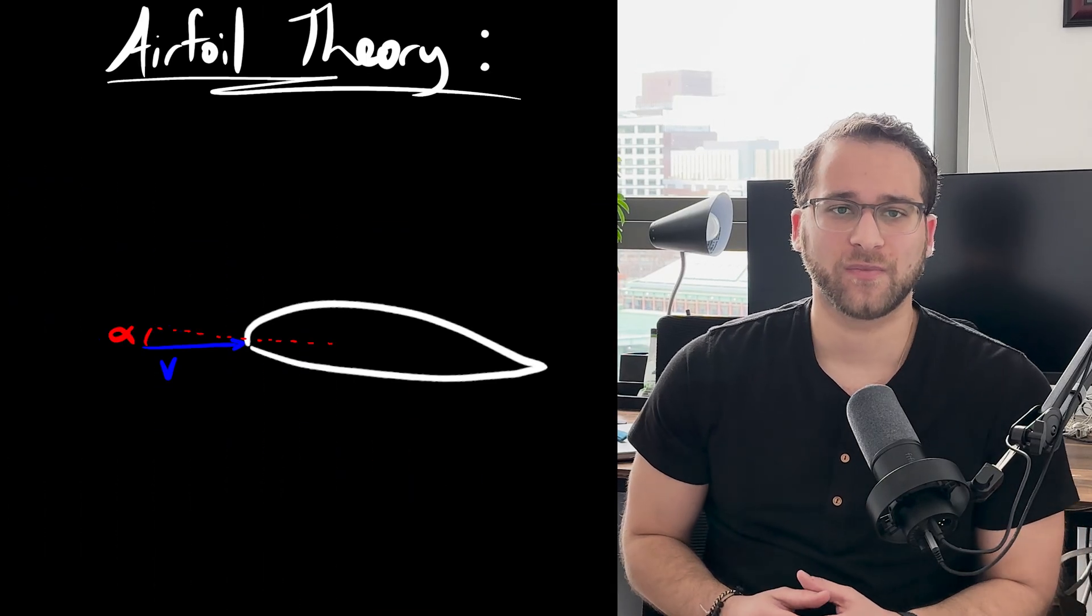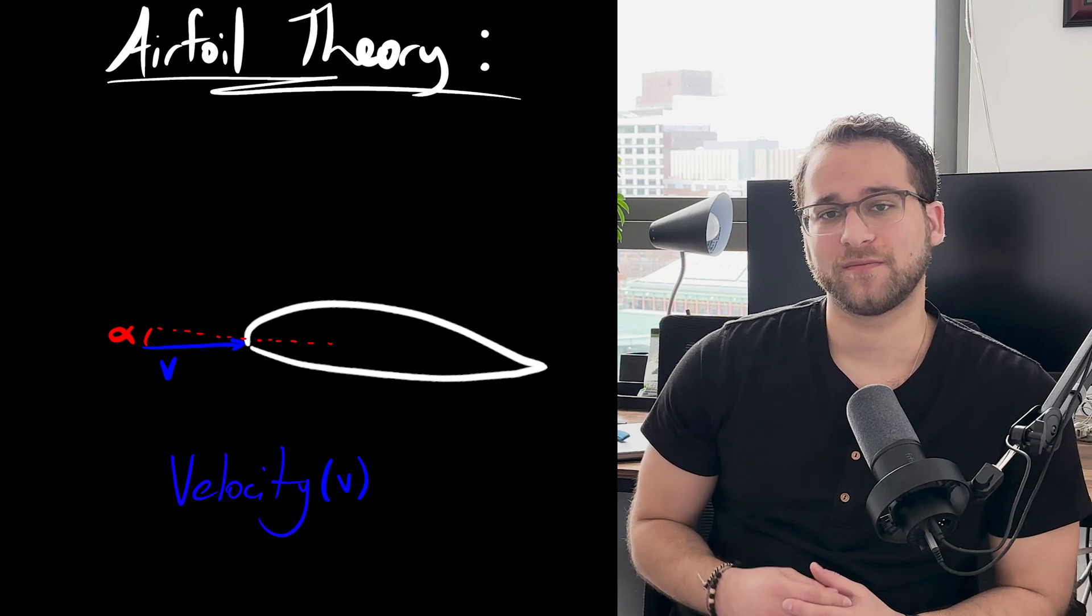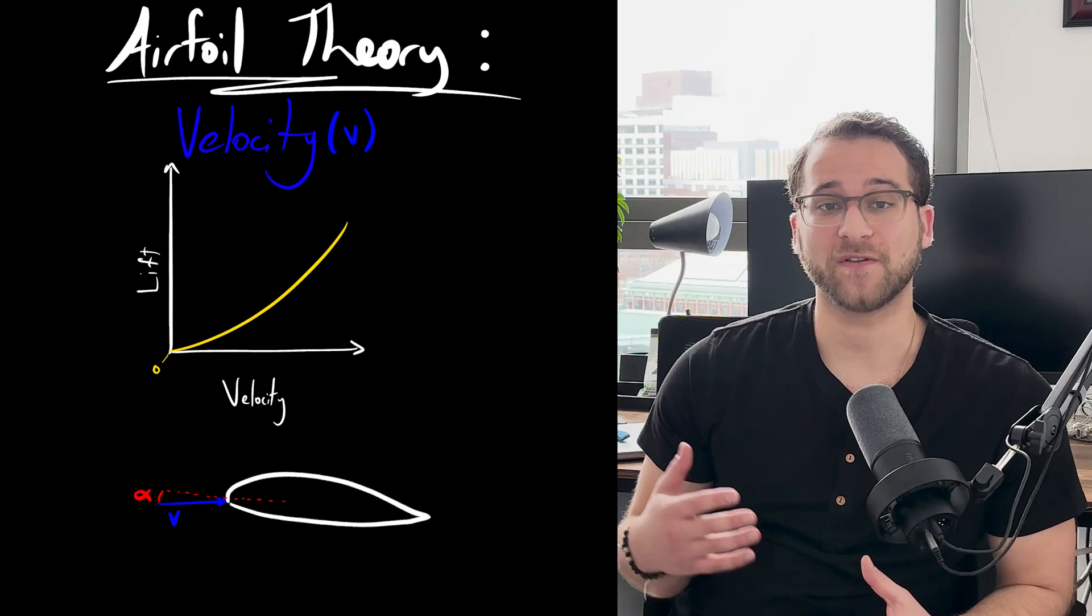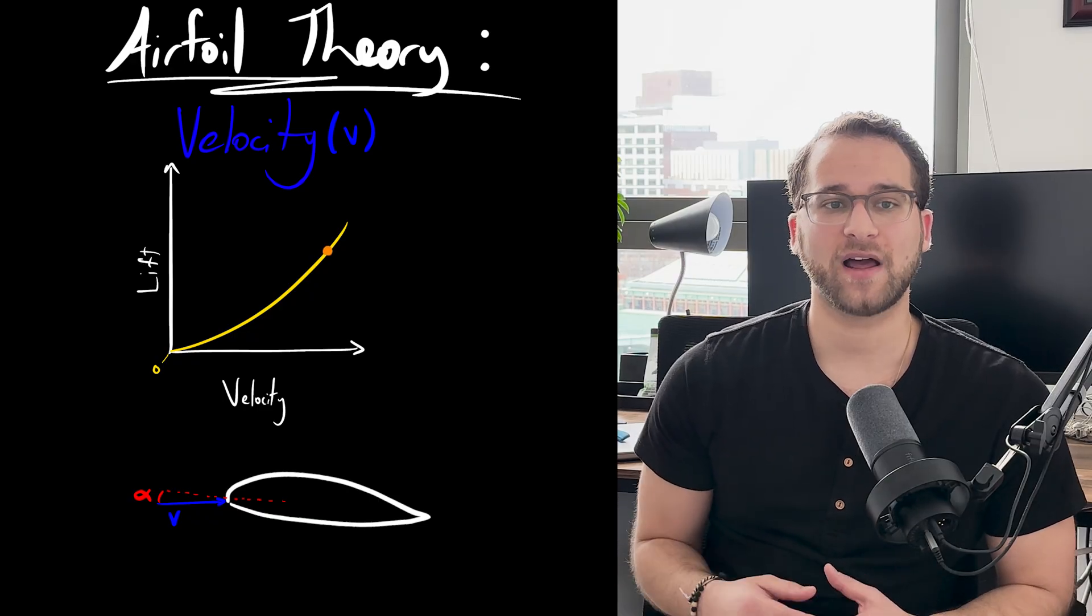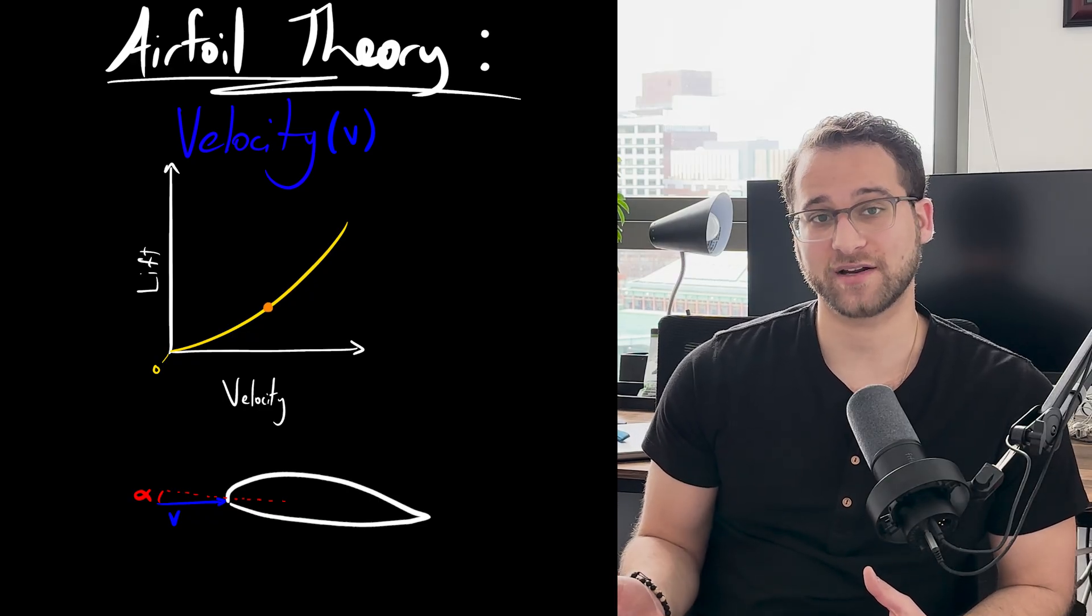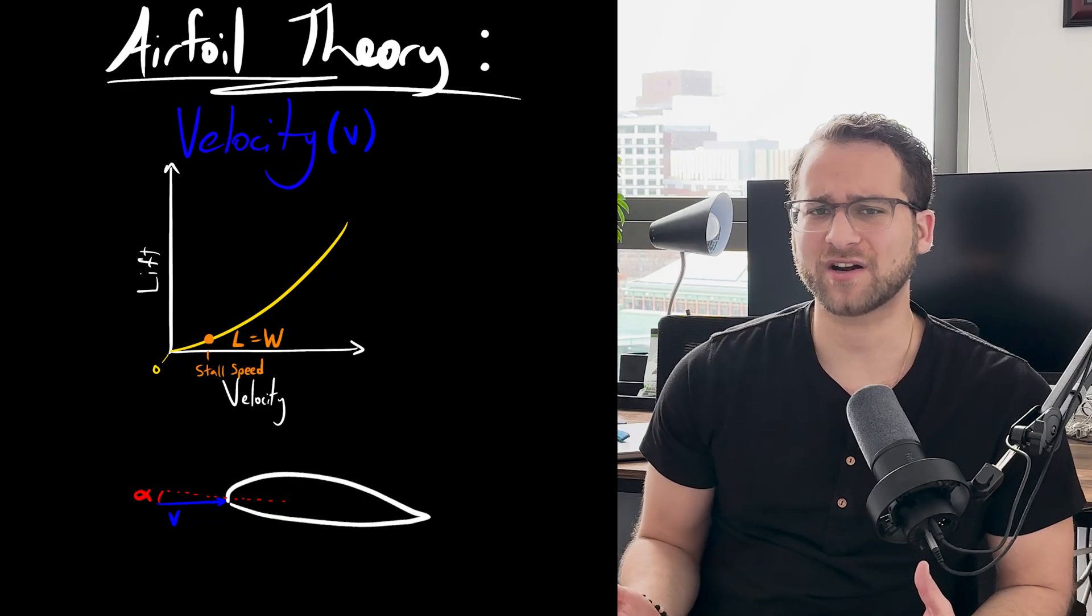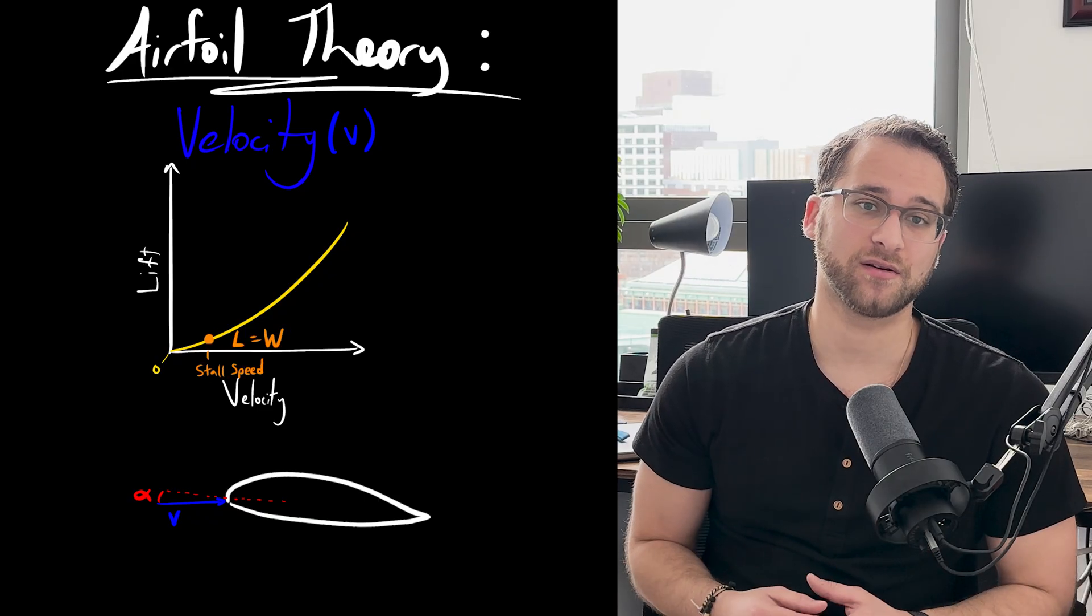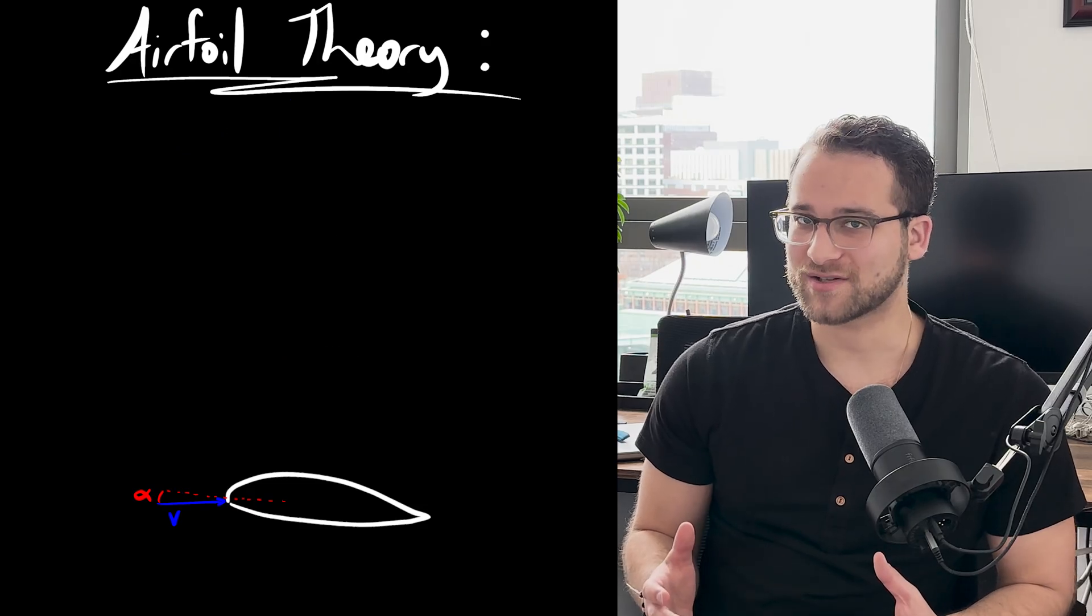But how do we calculate the lift on the airfoil? There are two main variables, velocity and angle of attack. The faster the airflow is relative to the foil, the greater the lift. As the velocity decreases, at a certain speed, the airfoil doesn't generate enough lift to balance out the weight. This can be referred to as the stall speed. But this is not the only way to stall.